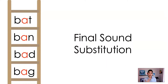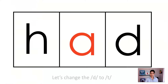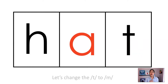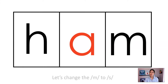After my students showed me that they were okay changing the initial sound, then I would show them a word ladder where the final sound was being changed. So here's the word had. Let's change the D to T — what word did we make? Hat. Let's change the T to M — what word did we make? Ham. Very good.